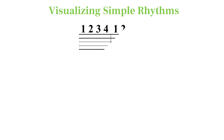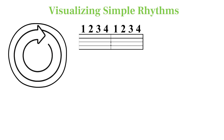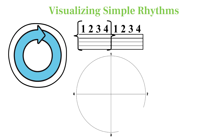Rhythm is circular in the sense that once one rhythmic cycle is completed, we're back to the beginning of another cycle. We could choose any length of time, but for now let's think of how we might visualize a single measure composed of quarter notes.